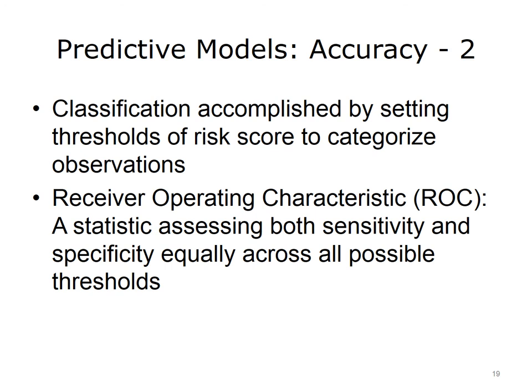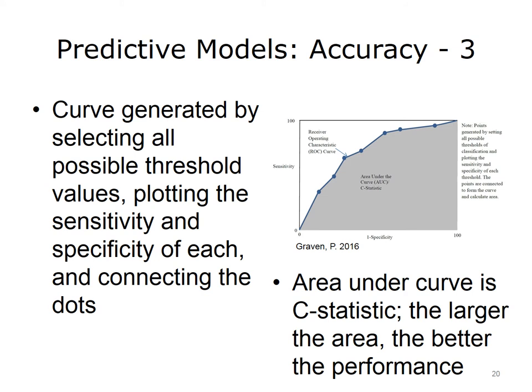One additional term worth knowing for risk adjustment models is the C-statistic. As mentioned, when predicted values are classified, a threshold is used. Since performance statistics will differ based on that threshold, it's common to calculate a statistic that captures accuracy — both sensitivity and specificity equally — across all possible thresholds. This is displayed as the receiver operating characteristic, or ROC curve. The area under the curve is known as the C-statistic, ranging between 0 and 100 percent; values above 50 indicate the model is performing better than randomly picking observations to exceed the threshold.